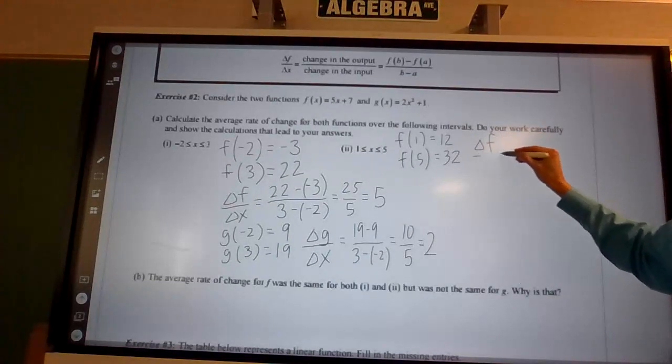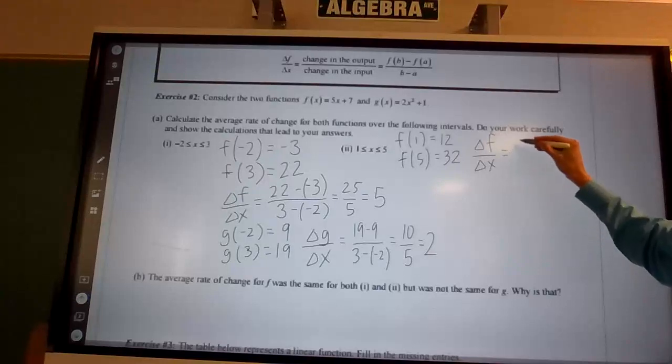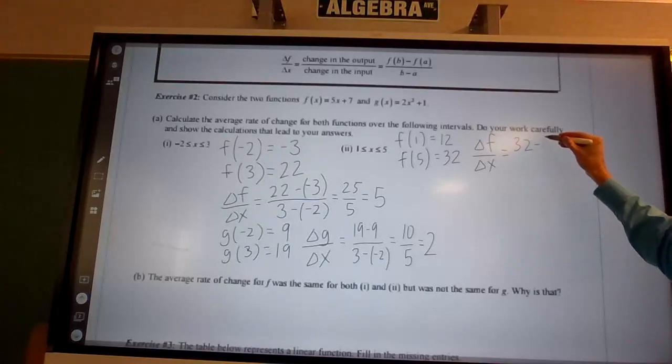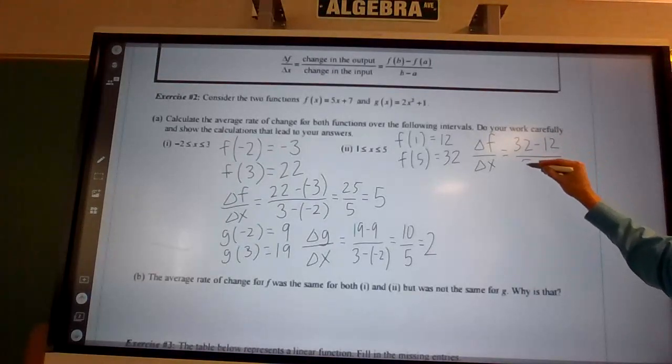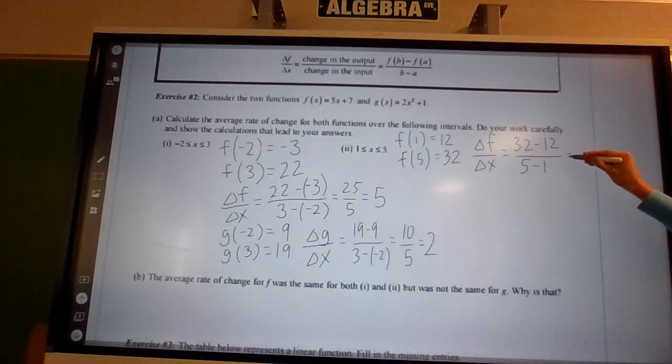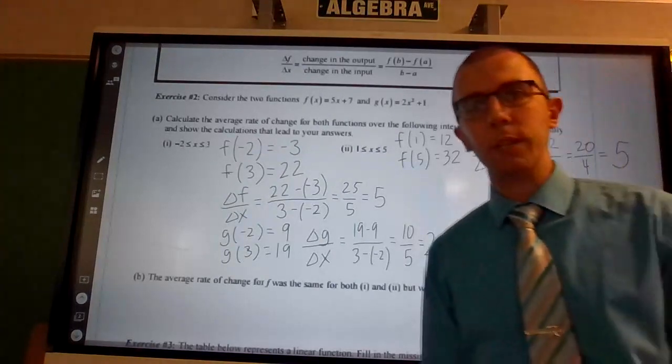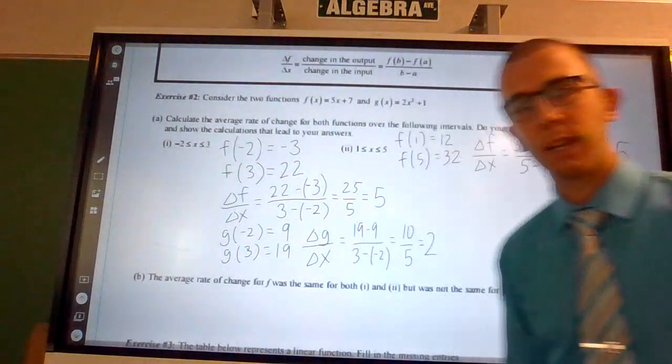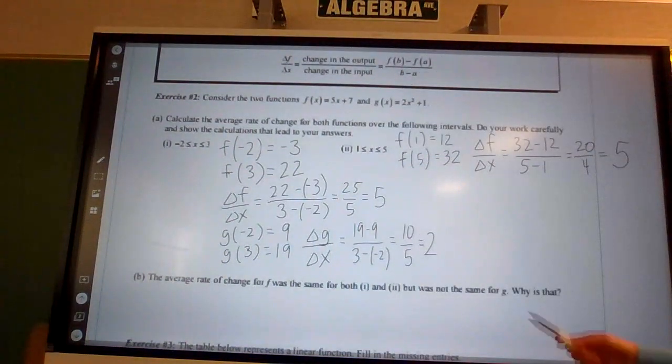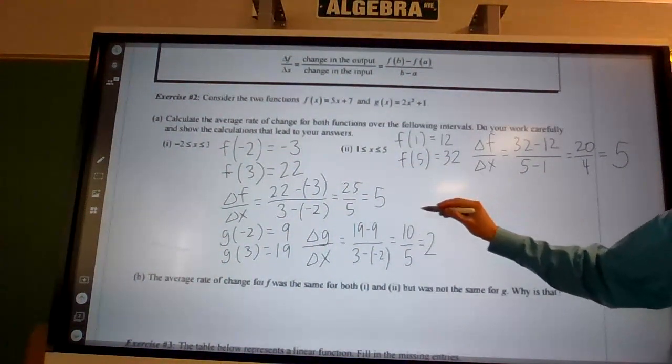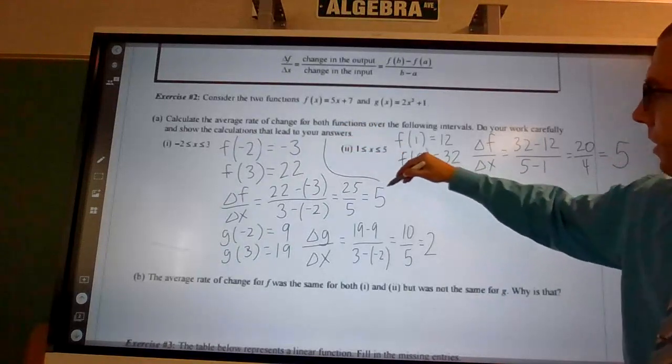So change in f over change in x equals 32 minus 12 over 5 minus 1, which comes out to be 20 over 4, which equals 5. Hmm, where else did we get something that equaled 5?